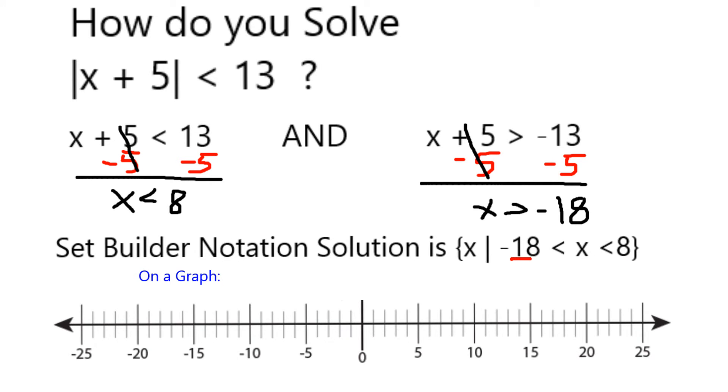We can also represent this on a graph, in this case a number line. Because it never actually reaches negative 18, I would put an open circle around negative 18, and it never really quite reaches 8, so I would put an open circle around 8.